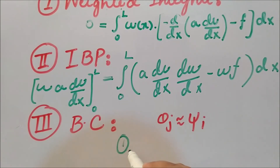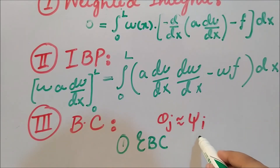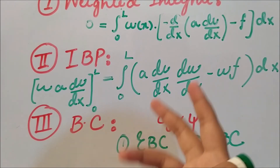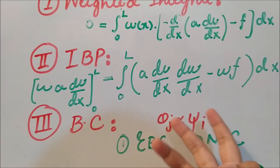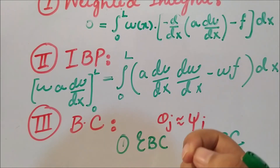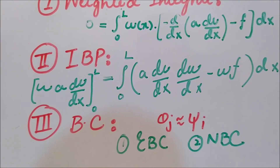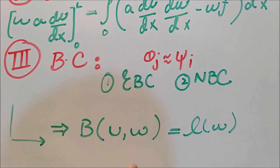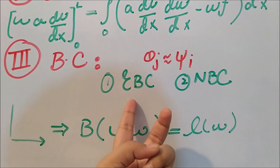There are two types of boundary conditions: the first is known as essential boundary conditions, and the second is known as natural boundary conditions. We will discuss these two types in the next video. After applying the boundary conditions and making this assumption, we arrive at a bilinear form and a linear form, which we will continue from in the next video.